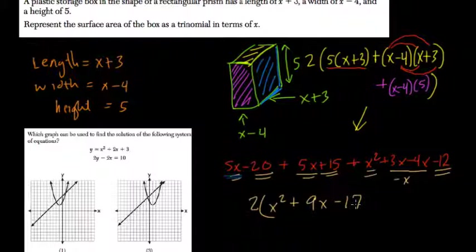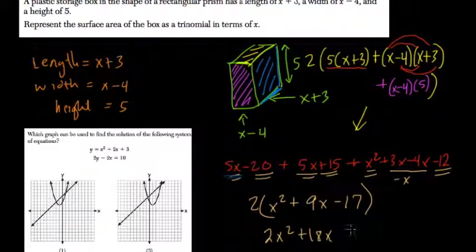And we're almost done. Just remember to double everything here because we need six faces, not three. So 2x squared plus 18x minus 34.